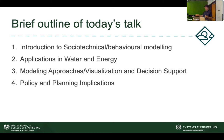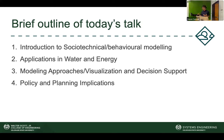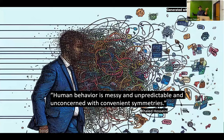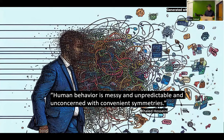Has anybody ever tried to model humans? Humans are a little messy — unpredictable and unreliable. One author had a nice quote: human behavior is messy and unpredictable, primarily because it's unconcerned with the conventional symmetries and practical aspects we think about in engineering.